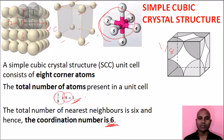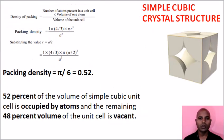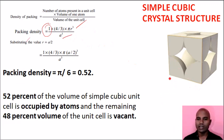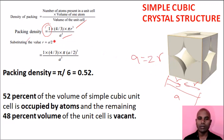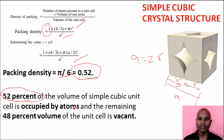Number of atoms: 1. Coordination number: 6. For packing density of simple cubic: packing density = number of atoms × volume of atom. Number of atoms is 1, volume of atom (sphere) = 4/3 π r³. Volume of unit cell = a³. Since a = 2r, substituting gives packing density = π/6 ≈ 0.52, that is 52%. So 52% is occupied by atoms; the remaining 48% is empty.